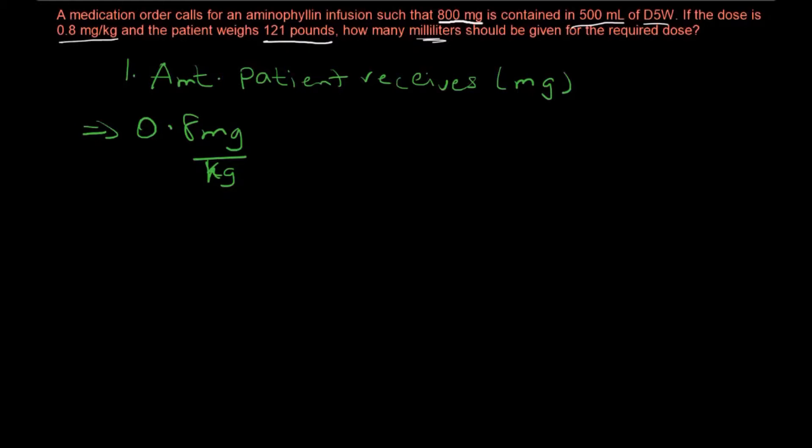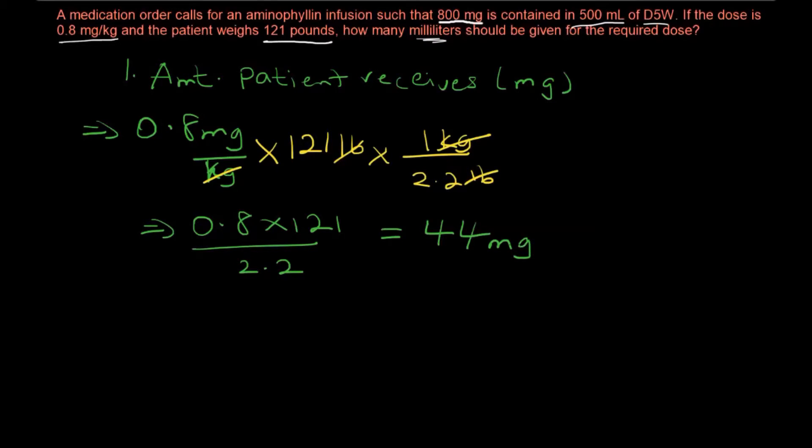For this particular patient who is 121 pounds, we can determine exactly what the patient should receive. If we convert the pounds to kilograms so our units are consistent, we can calculate the dimensions and end up with a quantity in milligrams. That amount would be 0.8 times 121 divided by 2.2, which equals 44 milligrams. This tells us the amount of aminophylline the patient needs based on the normalized dose.